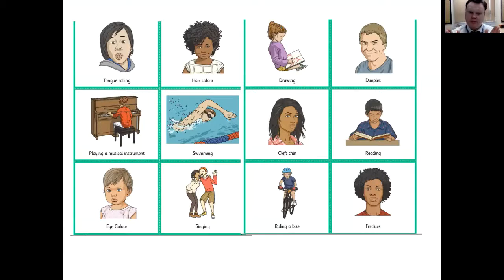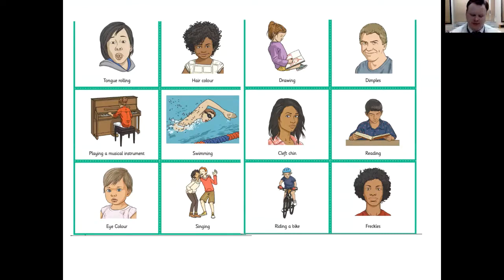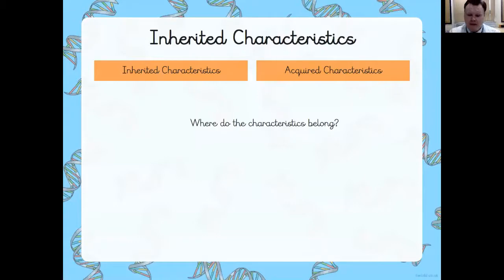You can pause the video here. You may write these in a list, or you may choose to draw a small diagram to show your understanding. However you organise it is up to you, but I need to see two separate areas showing 'inherited' and 'acquired' — inherited from parents, and learned over time. On the next slide I give the answers so you can self-assess your own work, but don't skip forward in the video.